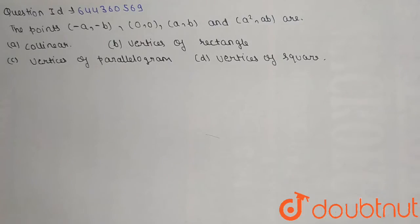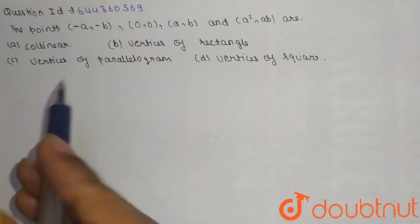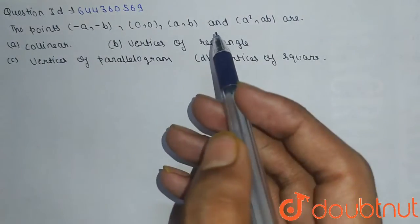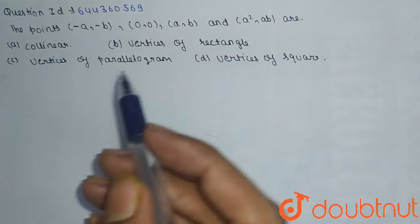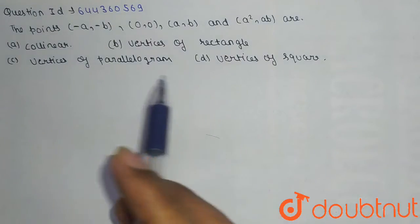Hello friends, our next question is on straight line. The question is: the points (-a, -b), (0, 0), (a, b) and (a², ab) are - the options are collinear, vertices of rectangle, vertices of parallelogram, or vertices of square.